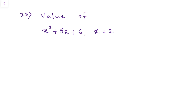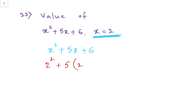Next: find the value of the given polynomial x square plus 5x plus 6 when x equals 2. It is very simple — just substitute 2 in the place of x. So it becomes 2 square plus 5 into 2 plus 6, which is 4 plus 10 plus 6, equals 20. So the value of the polynomial is 20.